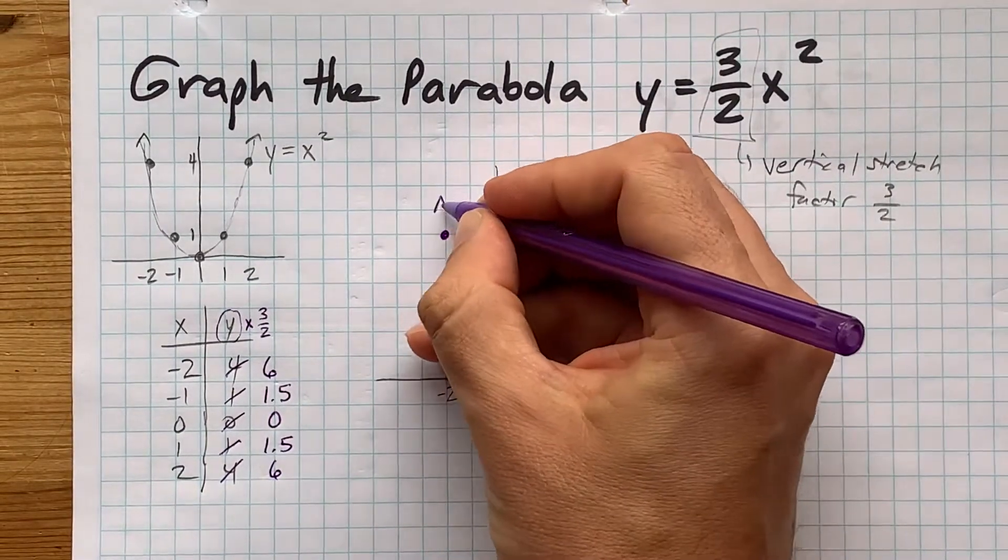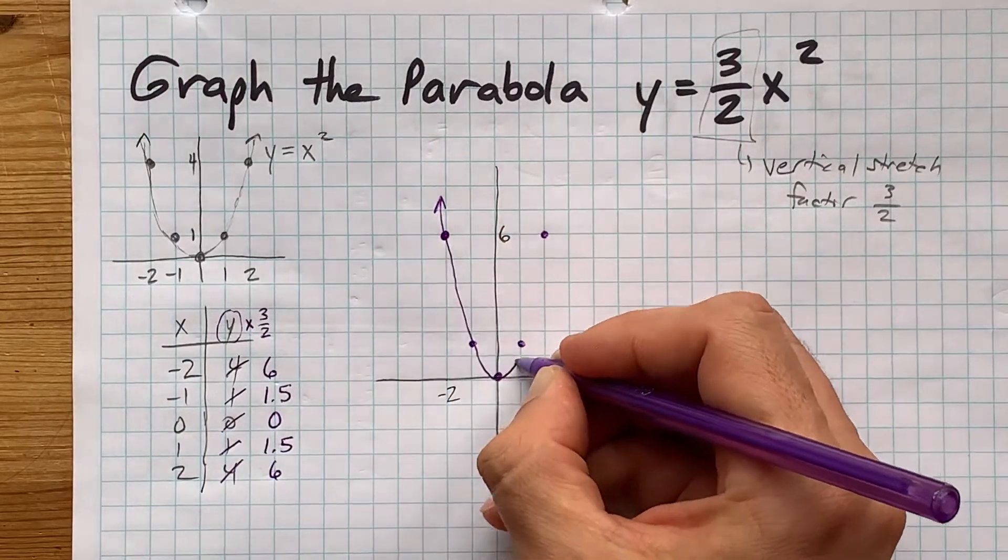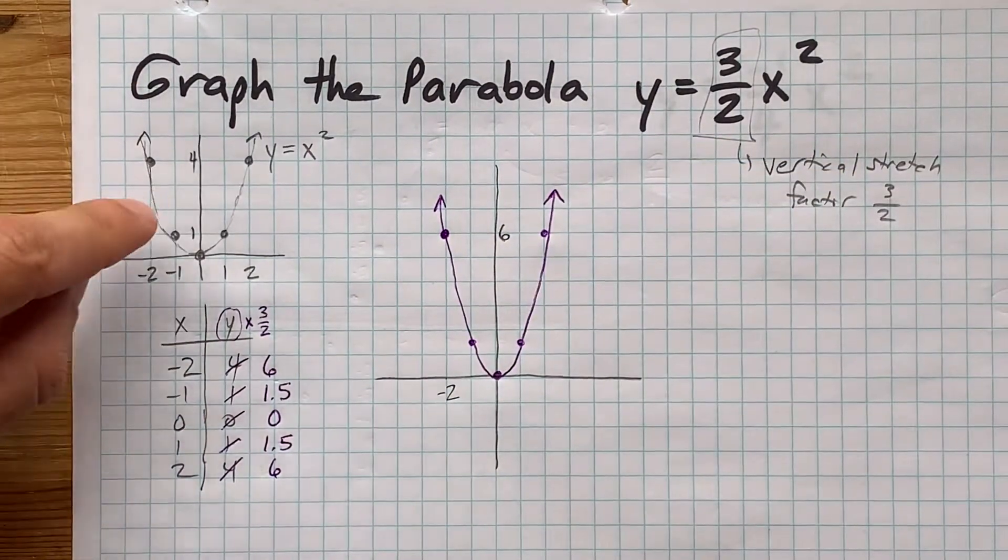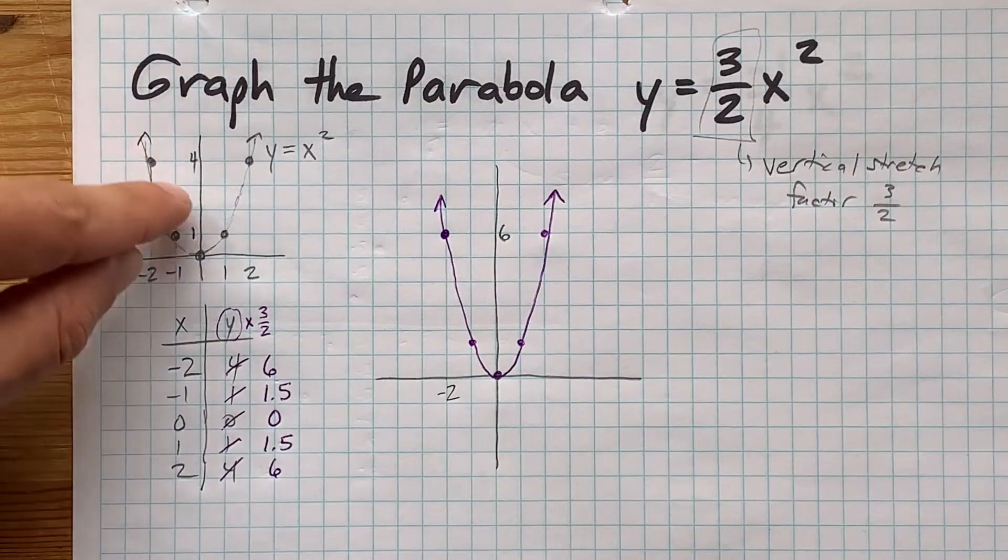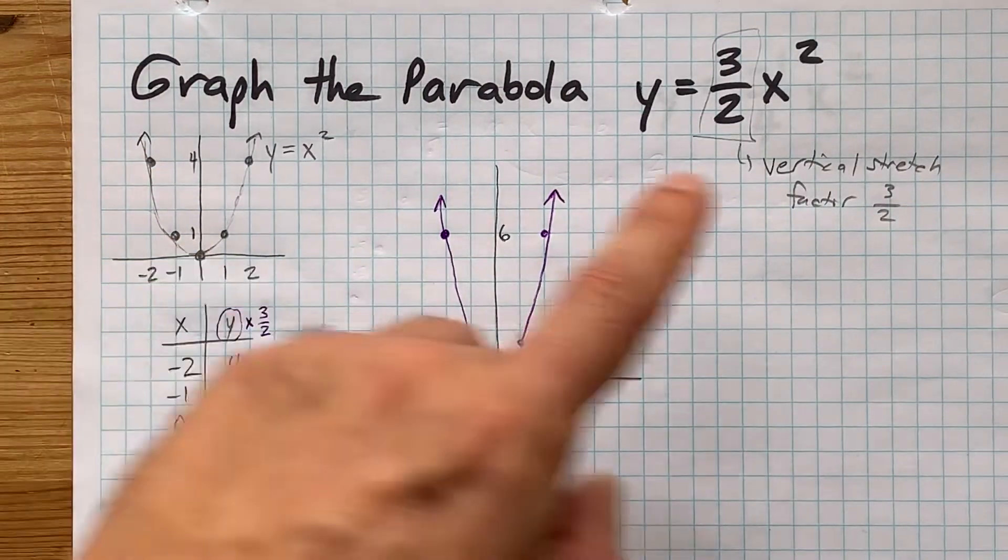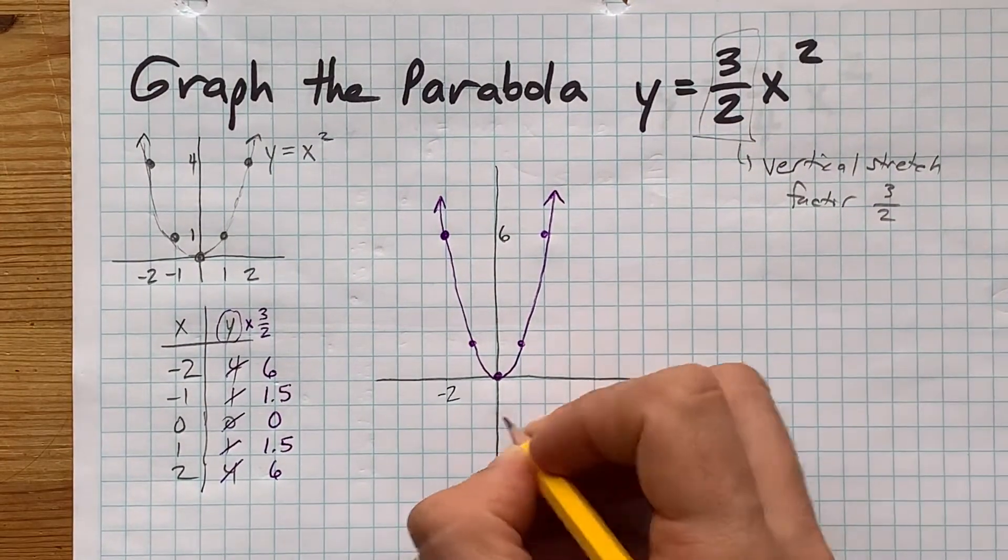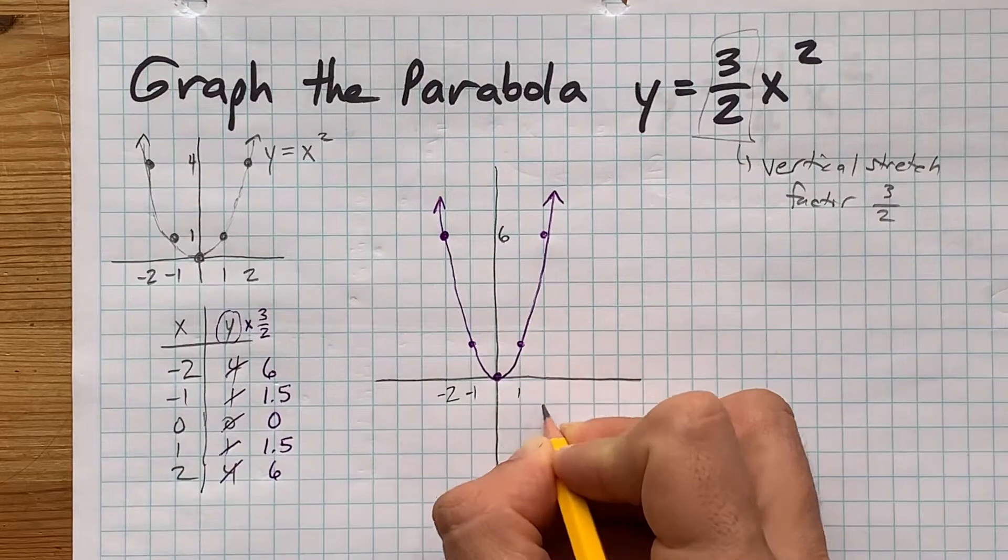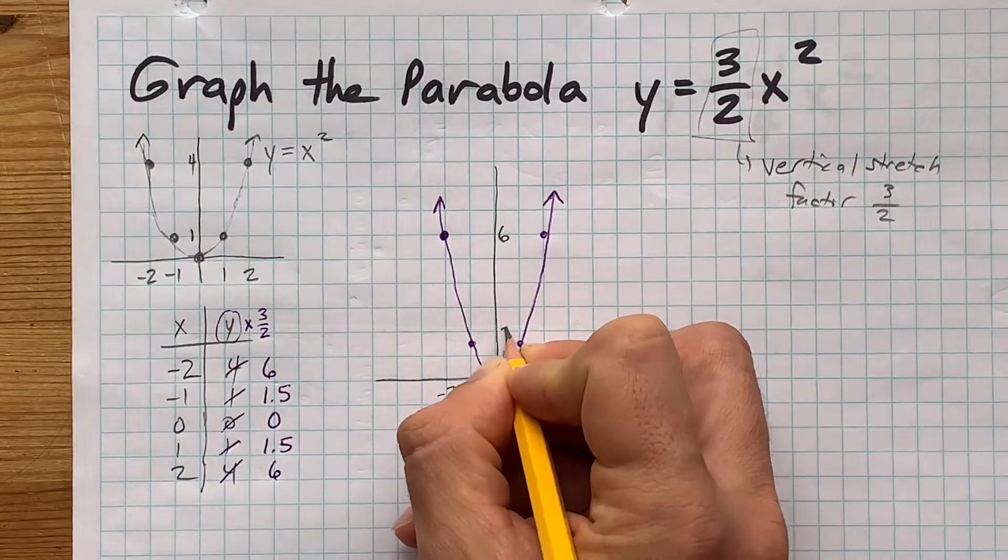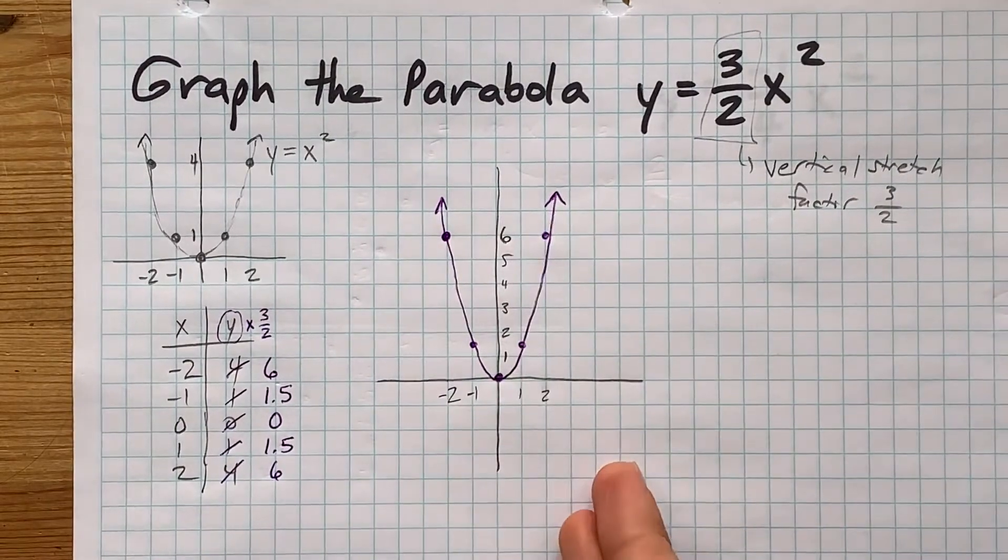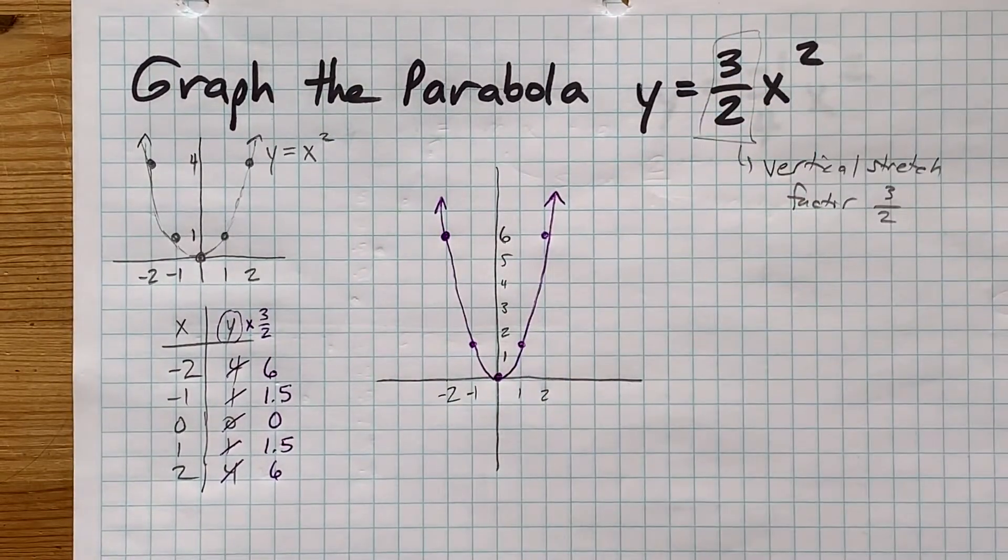Now, you'll notice that this curve looks slightly taller than the base curve that I drew over here. That's because each of the y values here, 4 and 1 and 0, got stretched by 1.5 or multiplied by 3 halves. I'm just going to fill this axis out so I can set a good example for y'all. And there you go. There's the graph of y equals 3 halves x squared.